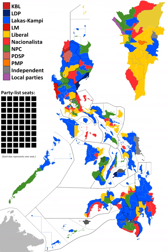Ilocos Norte 2nd: former First Lady Imelda Marcos is running for Congress once again, this time in her son's seat. Incumbent Ferdinand Marcos Jr. is retiring and running for the Senate. Imelda was formerly the representative for the First District of Leyte from 1995 to 1998. Marcos won with 80% of the vote.